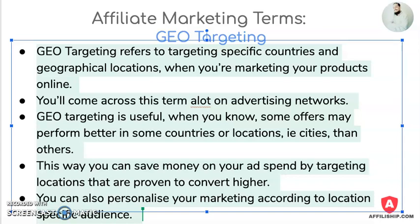Hey, this is Si from AffiliateShitDepCon. On today's affiliate marketing term, we're going to look at geo-targeting. Geo-targeting refers to targeting specific countries and geographical locations when you're marketing your products online. You'll come across this term a lot on advertising networks.